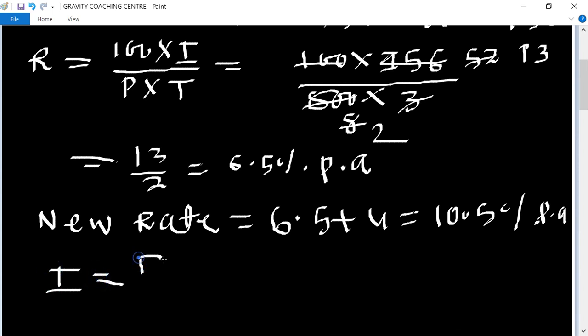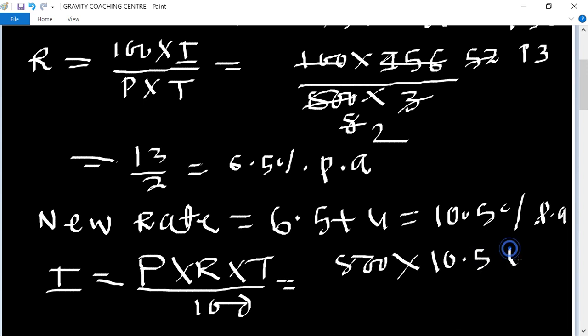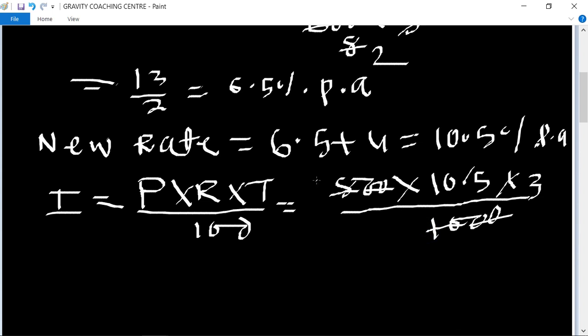So interest equal to P times R times T over 100. Calculating: 800 times 10.5 times 3 over 100. Cancel zeros. Table of 2: 4, 2, 8 and 4, 5, 10 and 20. One times the product of this number equal to 252. So therefore amount equal to.